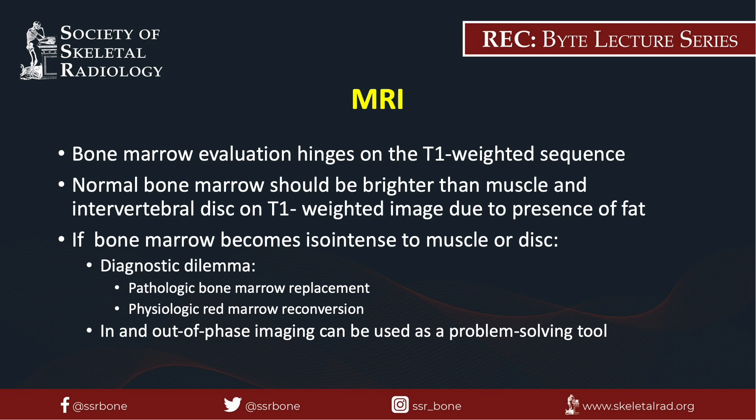The evaluation of bone marrow hinges on a T1-weighted sequence. Normal bone marrow signal should be brighter than adjacent muscles on a T1-weighted image due to the presence of fat. If the bone marrow is hypointense to muscle, this is worrisome for a pathologic bone marrow replacement process. If the bone marrow is isointense to muscle on T1-weighted images, this is a diagnostic dilemma and can indicate either a pathologic bone marrow replacement process or red marrow. In this setting, the use of in-and-out phase imaging may be helpful as a problem-solving tool.